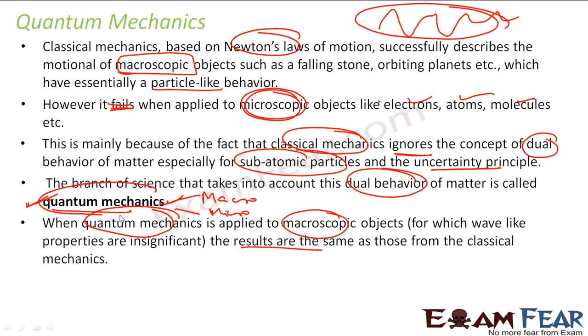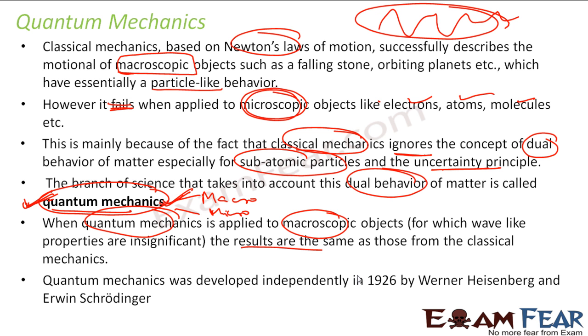So quantum mechanics, you can say, is a better approach to physics than classical physics. Because classical physics is good to understand initially because it is easy to understand the three laws of motions. But in actual world, you can get your answer from quantum mechanics. It is difficult but it works everywhere. And this quantum mechanics was developed independently in 1926 by Heisenberg and Schrödinger. These are the two people who developed this quantum mechanics. Very powerful tool and these people are really rock star, Heisenberg and Schrödinger.